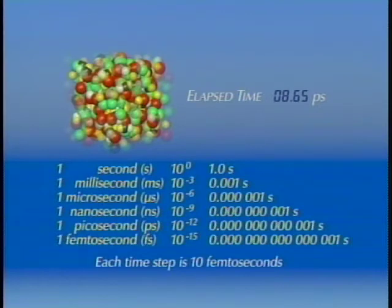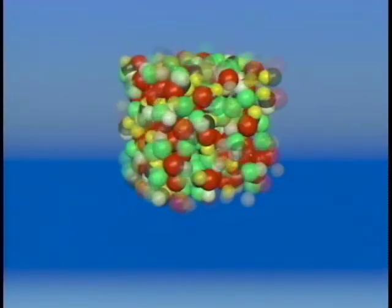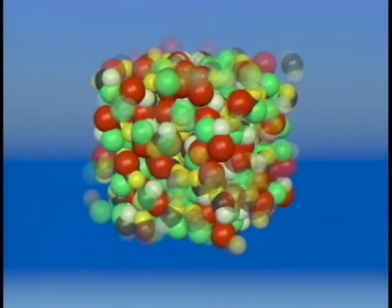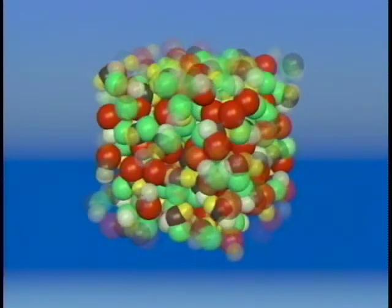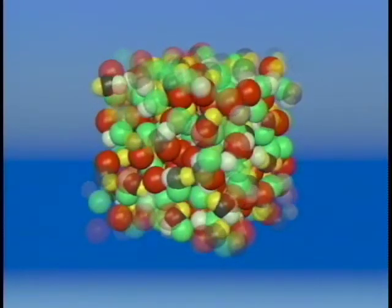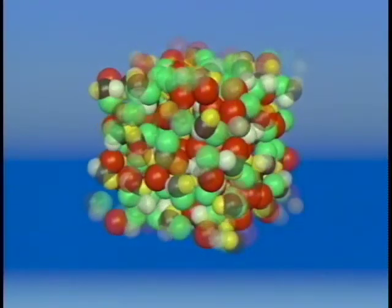As molecules move to the edge of the laboratory frame, they are made to reappear on the opposite side of this cubic frame of reference. Thus the same 108 molecules are always present, and the density of the ensemble remains constant. The migration from one side of the lab frame to the other is represented visually as a continuous fading in and fading out of molecules at the boundaries of the lab frame.